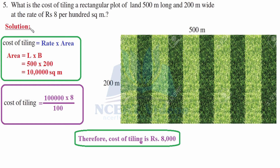Cost of tiling equals rate into area. We have both values now. You can cancel two zeros from the denominator and numerator and multiply the rest. It turns out the cost of tiling is rupees 8,000.